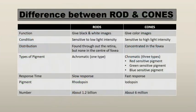Now let's look at the difference between rods and cones. In terms of function: rods give black and white images and work in low light intensity — such as in the evening or dim conditions. Cones give color images and are sensitive to high light intensity. Regarding distribution: rods are found throughout the retina except in the center of the fovea, while cones are concentrated in the fovea.